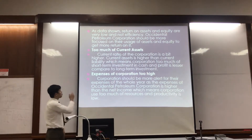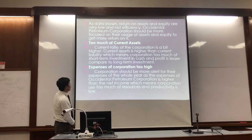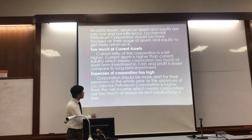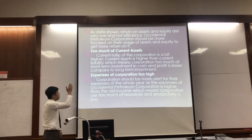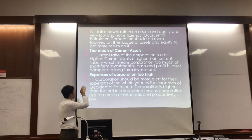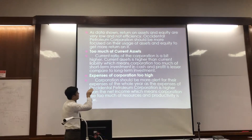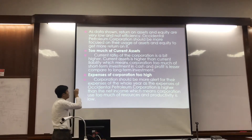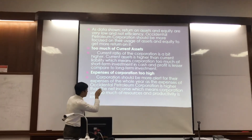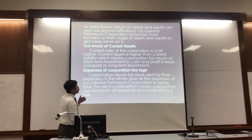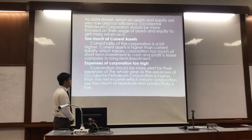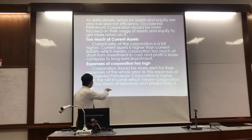As the data shows, the relation on the axis and equality are urban noise and not equality. Operating performance component should be more precise than other usage of the axis, and the equality is 2-bit more of the arms. Too much credit axis — credit is the reduced competition at 0.8 highs. The company axis is higher than trading leverage, which means completing too much of the short-term. The investment on the cash and the profit is less than completed to a long-term investment. In some cases, the competition is too high, showing early choosing over four years, and the acceptance of the operation is higher than the valuation, which means use too much research and the reduced is too low.